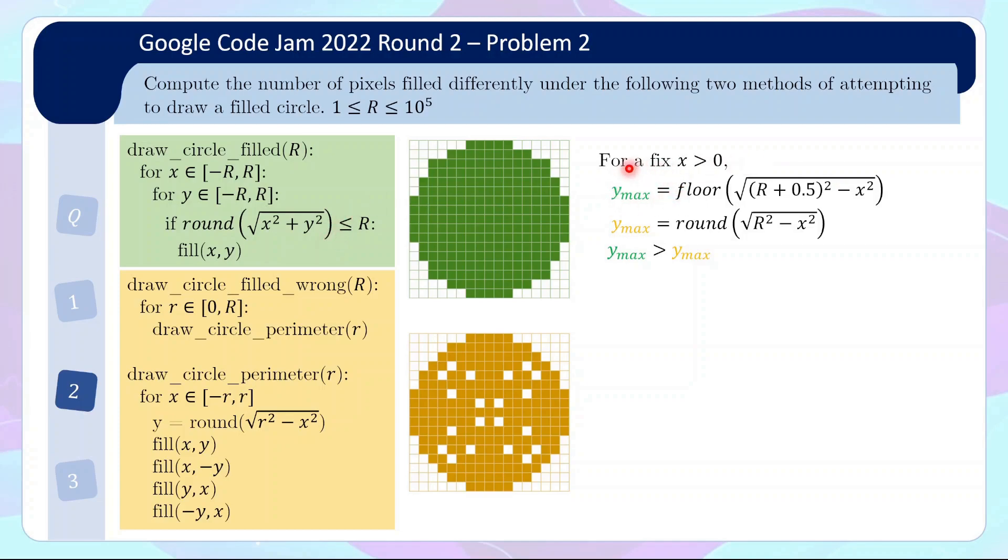So this is y_max, and for the yellow method, the maximum is basically you draw the ring of radius capital R, and that y value you get will be the maximum. So this is given by round of sqrt(r^2 - x^2). And you can quite easily check, or maybe tediously check that the green y_max is bigger than or equal to the yellow y_max.